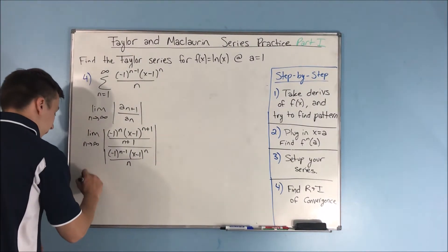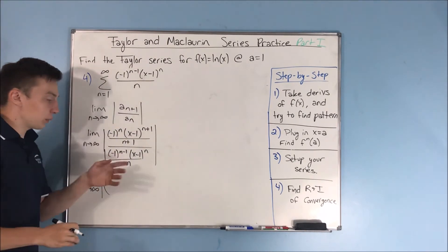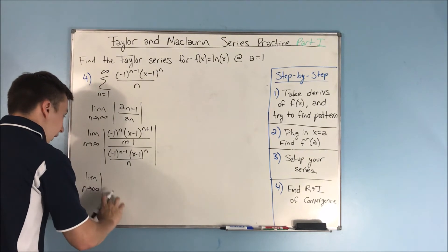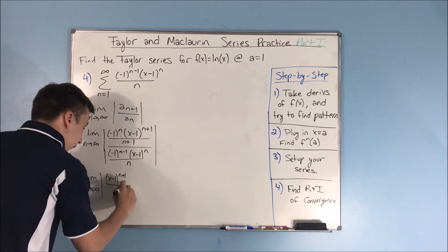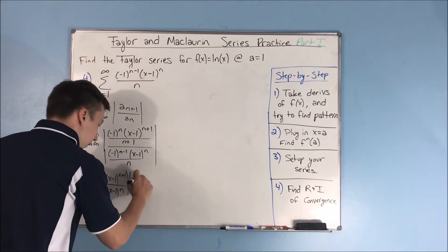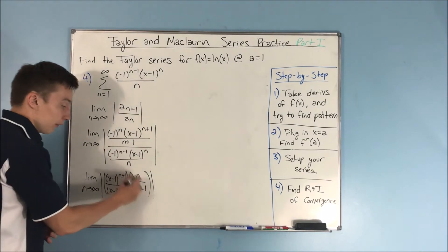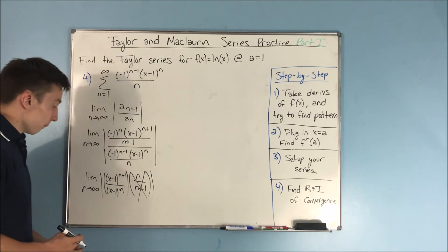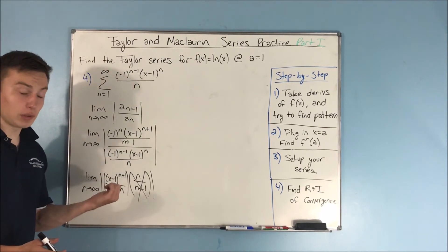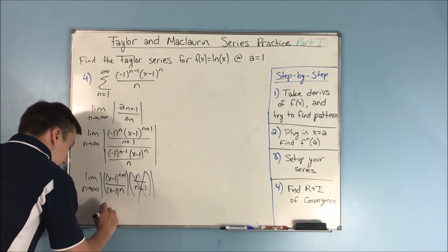We can make this look nicer by grouping everything together. The negative ones — since we have absolute value signs, those go away. We have x minus 1 to the n plus 1 over x minus 1 to the n, multiplied by n over n plus 1. We can take the limit of each part separately. The limit of n over n plus 1 is 1. And x minus 1 to the n plus 1 over x minus 1 to the n just gives us x minus 1. So the answer to this limit is the absolute value of x minus 1.